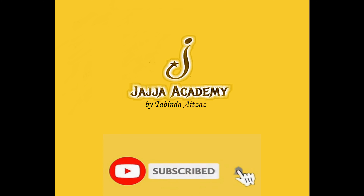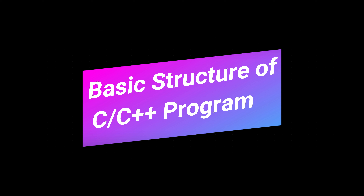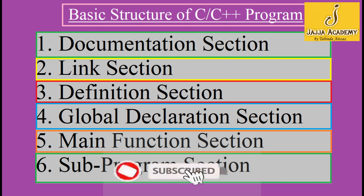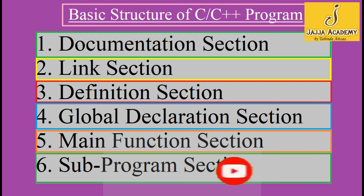Hello viewers, I am Tabinda Aitzaz and I welcome you to Jaja Academy Lahore. Today we are going to discuss the basic structure of a C program. The structure of a C program is very flexible and provides a well-defined way of writing programs, and this ability increases the power of C language. The basic structure of a C program is divided into six main sections: documentation section, link section, definition section, global declaration section, main function, and subprograms section.